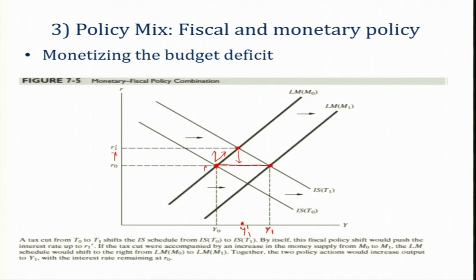The initial equilibrium position is A, then B, and finally C. Initially, the increase in government expenditure moves equilibrium from A to B with an increase in the rate of interest. But if there is an equivalent increase in money supply, the LM curve shifts rightwards and C becomes the new point of equilibrium. The rate of interest is restored to its initial level and output increases from Y-naught to Y-1.